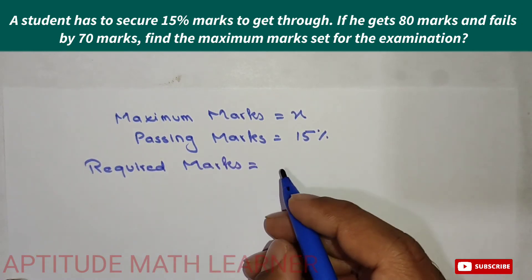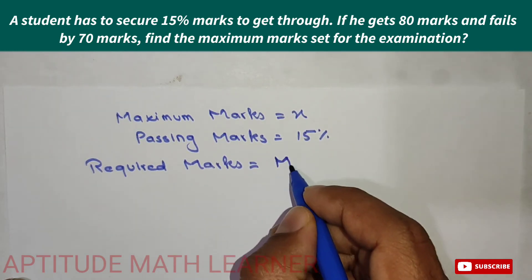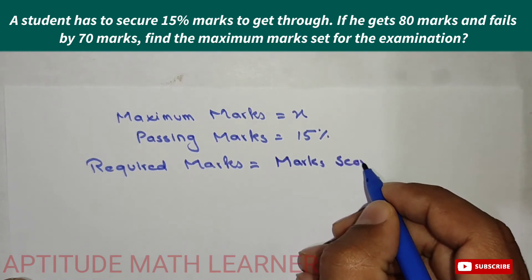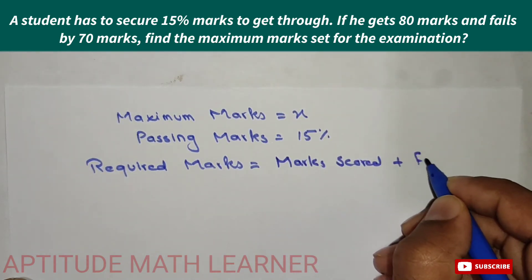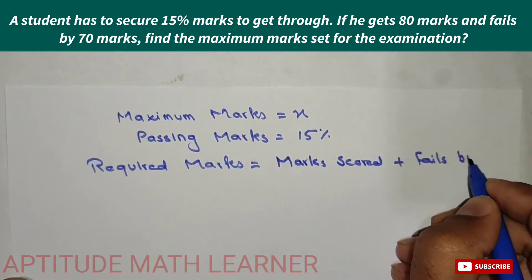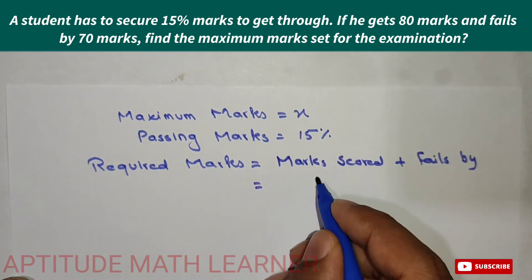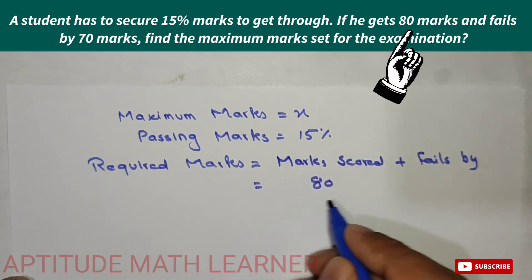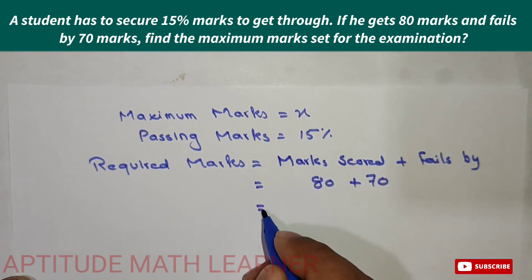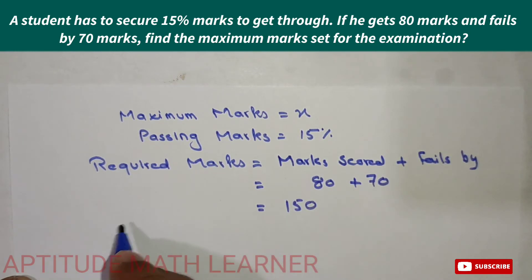The student has scored 80 marks and fails by 70 marks. So the required marks to pass equals marks scored plus fails by: that is 80 plus 70, which becomes 150. So 150 is the required marks to pass.